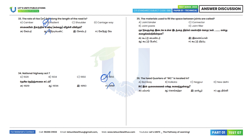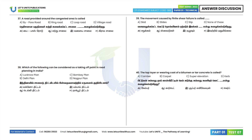35th question: The material used to fill the space between joints — Option D is the correct answer. 36th question: The headquarters of IRC is in New Delhi. 37th question: A road provided around a congested area is called a bypass road.